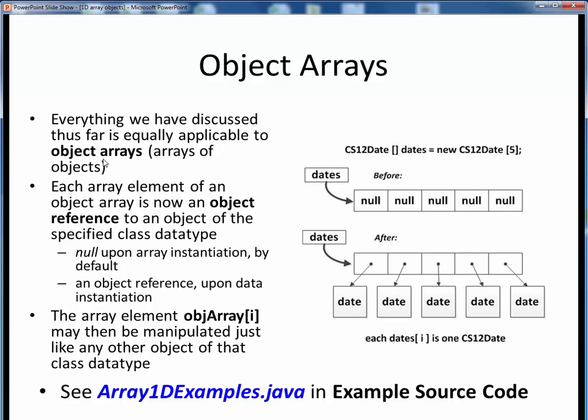The only difference is that now, every element of an array is an object reference, a pointer to some actual object instance elsewhere in memory. In this example on the top right, we can declare the CS12 date array called dates and instantiate it such that it can hold five CS12 date object references.